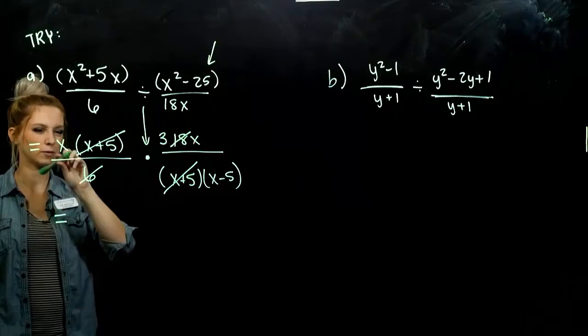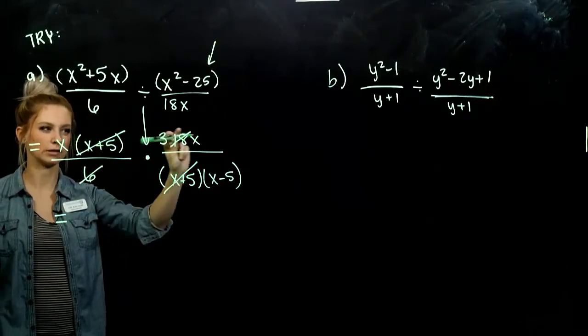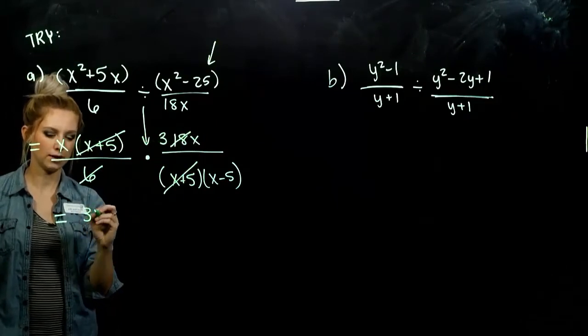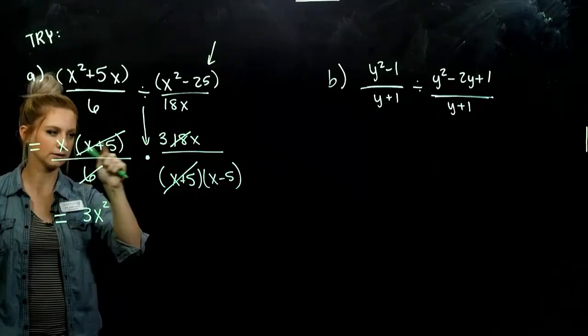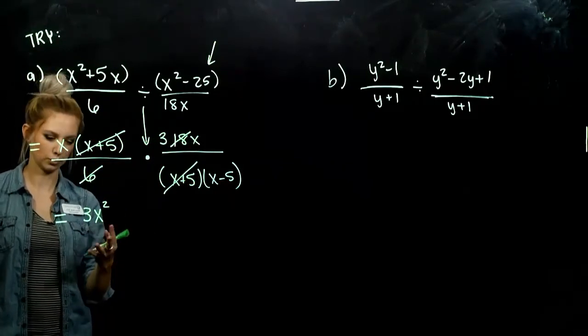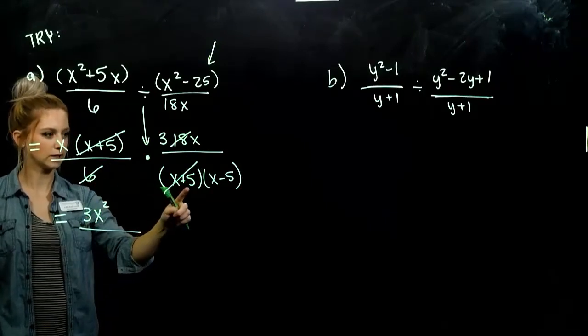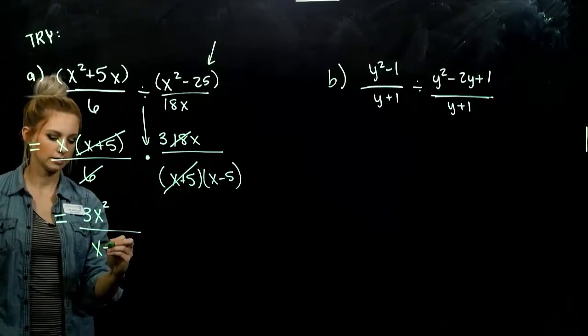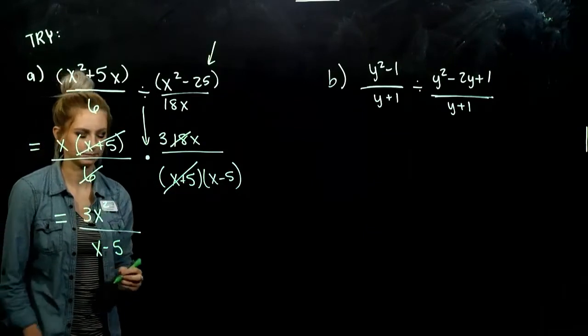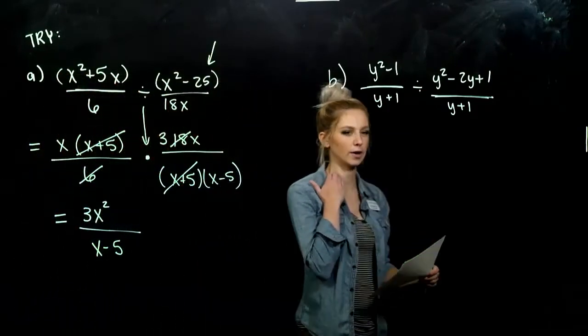So what are we left with when we multiply straight across the top? I've got three and two factors of x being multiplied. So 3x squared. And down below, all of these canceled out. We're just left with x minus 5. Simplified as far as we can go.